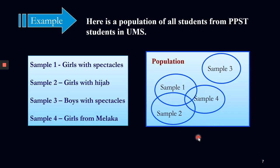Let's see the example. Here is a population of all students from PPST students in UMS. Sample 1 is girls with spectacles, Sample 2 is girls with hijab, Sample 3 is boys with spectacles, and Sample 4 is girls from Melaka. All the samples we can group into a diagram. We can see that there is overlapping over here for Sample 1, Sample 2, and Sample 4.